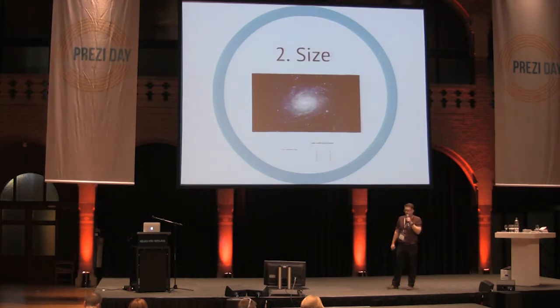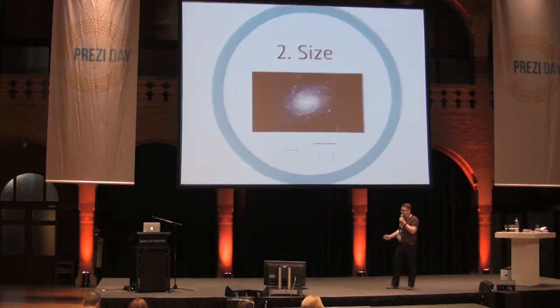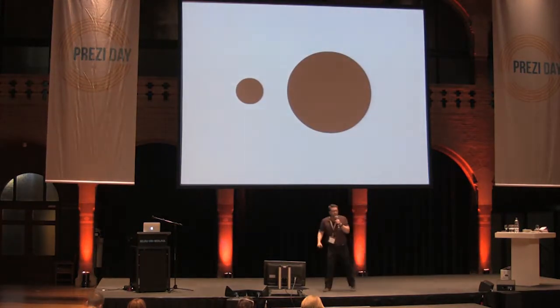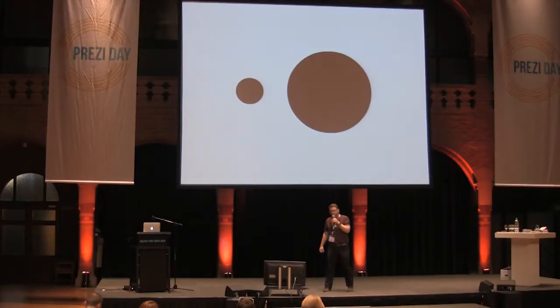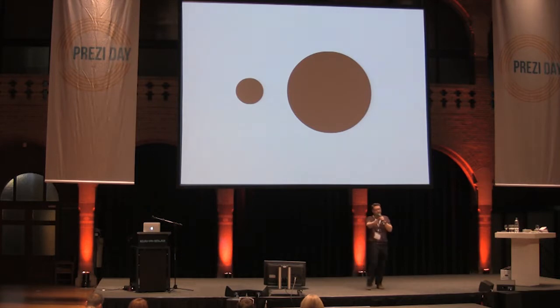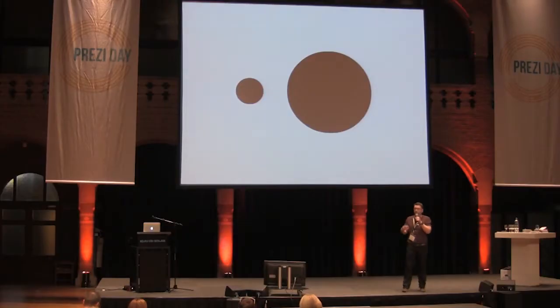The next thing that's important about your Prezi overview is size. The question here is: look at those two objects — which do you think is most important? In general, people perceive larger things as being more important. So in your Prezi, make important things bigger and less important things smaller.